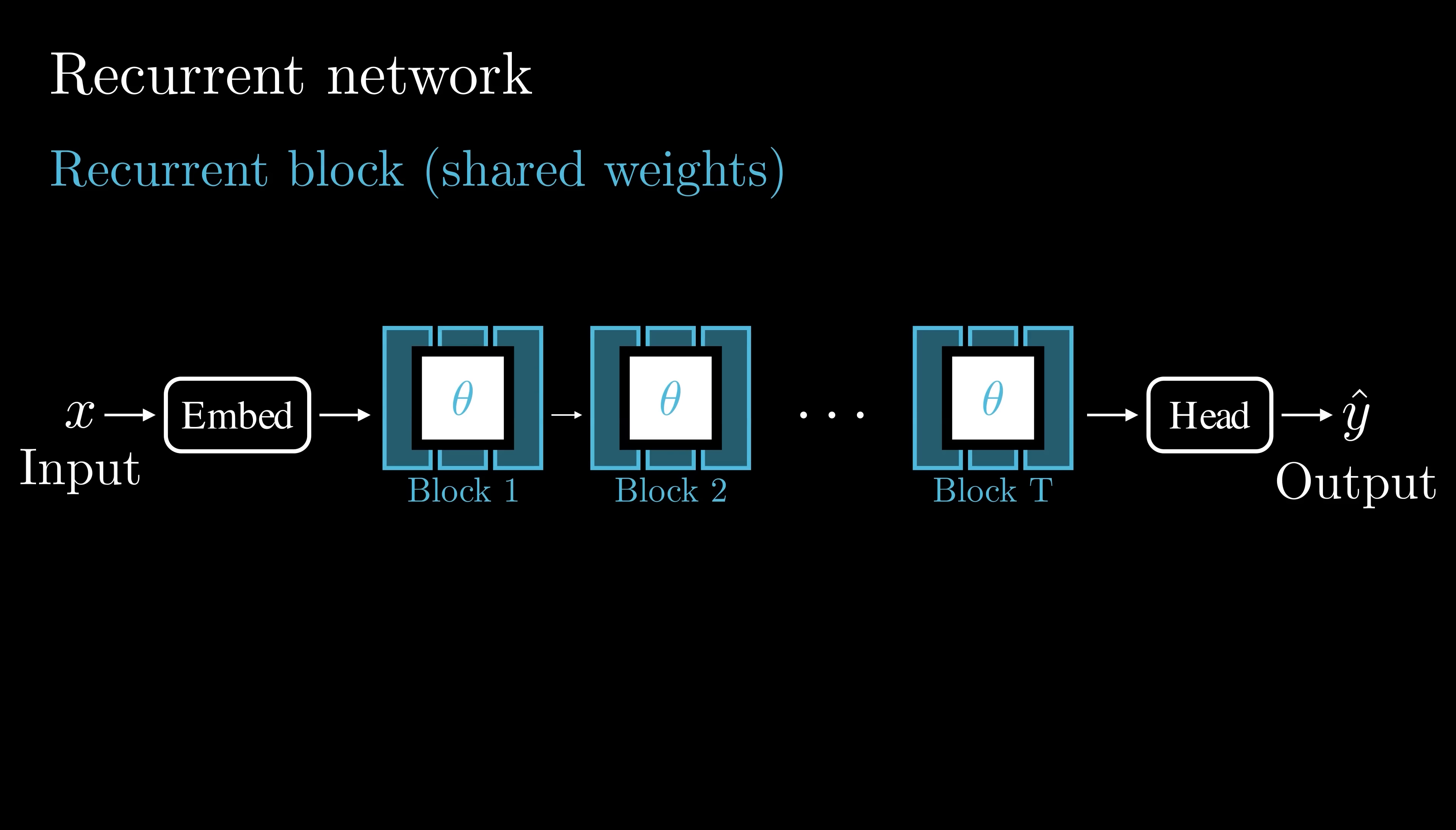However, as the hidden representations are updated over many iterations, the model can gradually lose track of the original problem context.